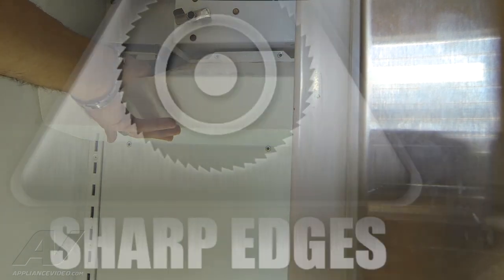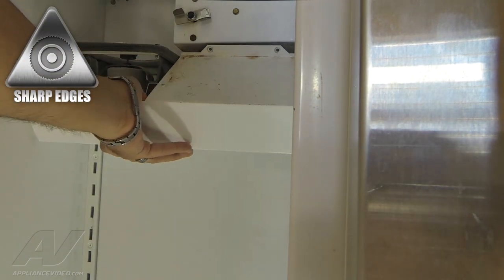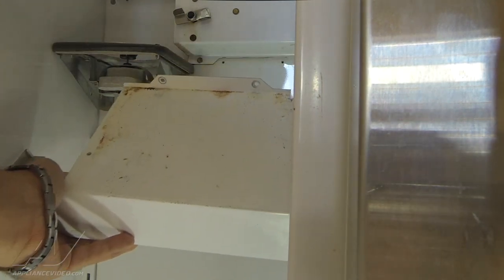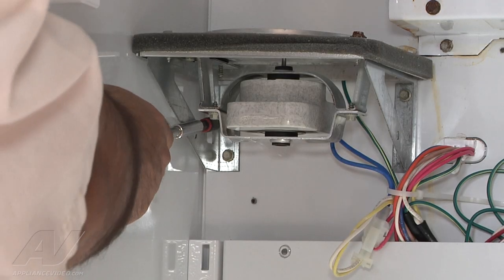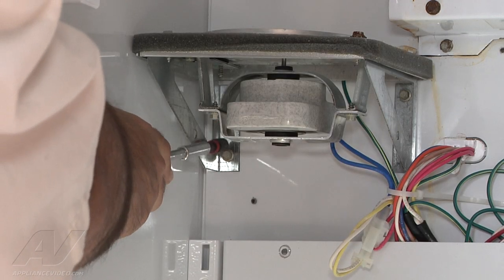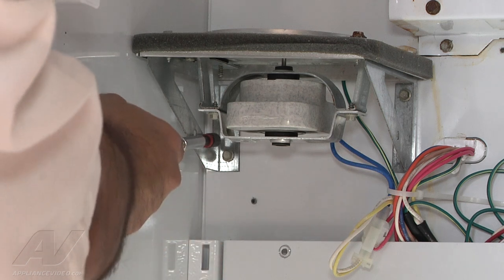Once the last screw has been removed, you can tilt the panel towards you, lift up and pull out. Now we have access to remove the evaporator fan motor assembly and bracket. To do so, there's four quarter inch screws, two on each side, that we have to remove.